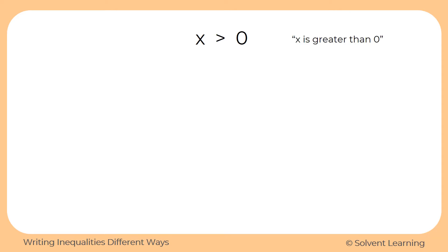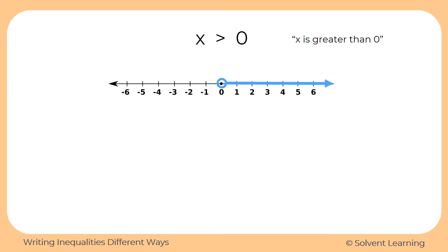We know that this inequality reads as x is greater than 0. If we represent this on a number line, we can see that x is everything shaded in blue — all of the numbers that are greater than 0, everything to the right of 0 on the number line. But we can also look at this as 0 is less than all of the values in blue that represent x. So we could also say that 0 is less than x.